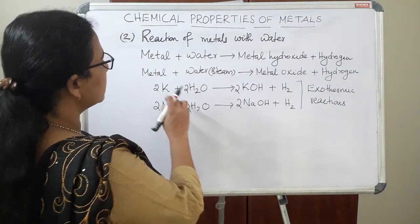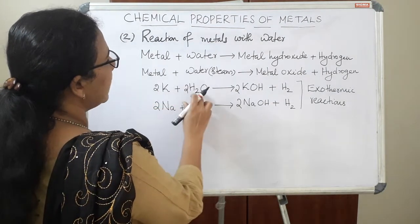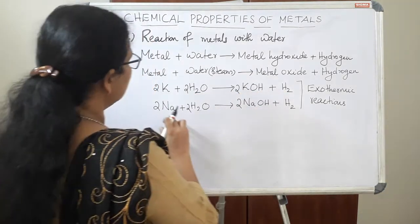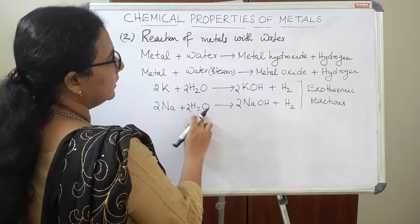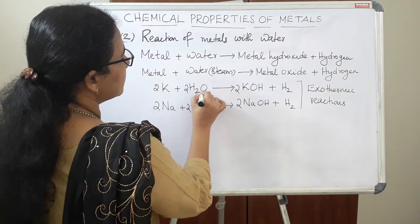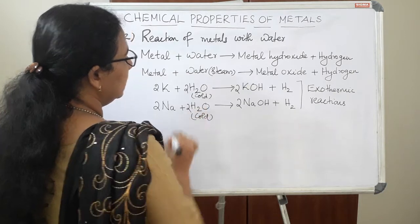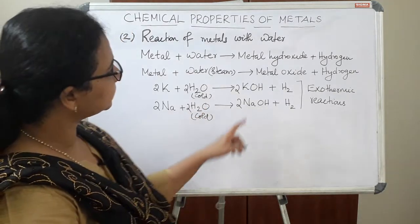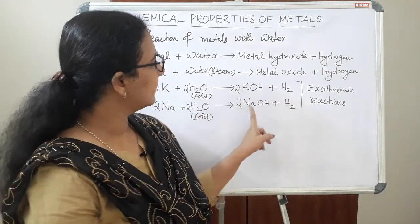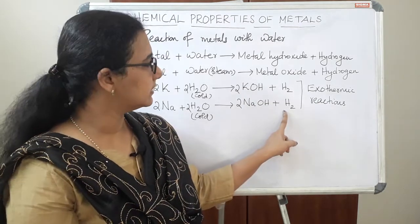Let us consider two reactions — one with potassium and the other with sodium. When potassium reacts with water, it produces the corresponding hydroxide and hydrogen gas. When sodium reacts with water, it also produces the corresponding hydroxide and hydrogen gas. In these two cases, we can use cold water. We can see potassium hydroxide and hydrogen gas in the first case, and sodium hydroxide and hydrogen gas in the second.